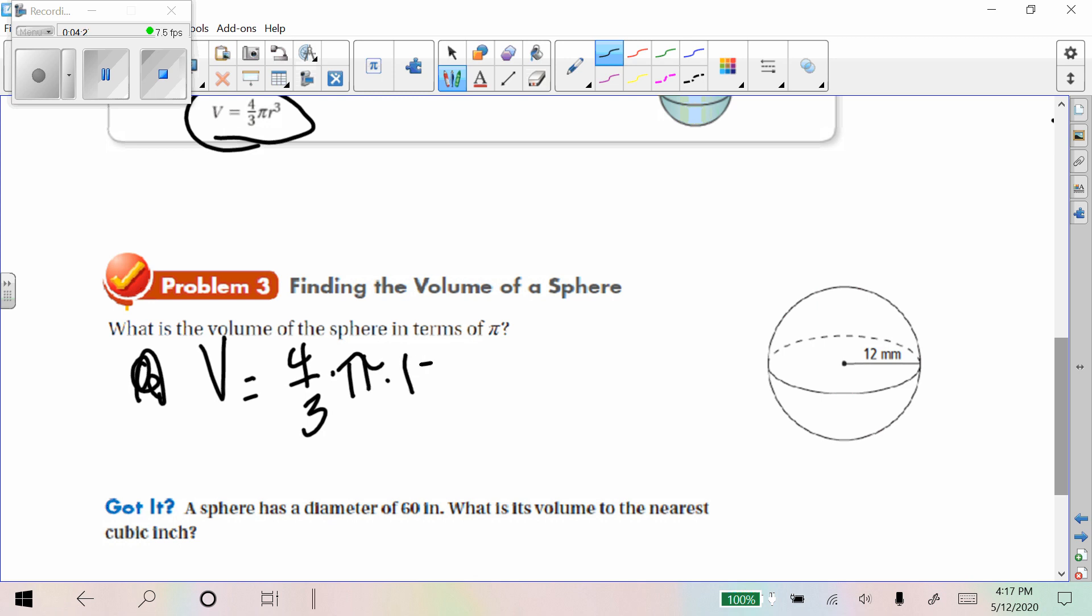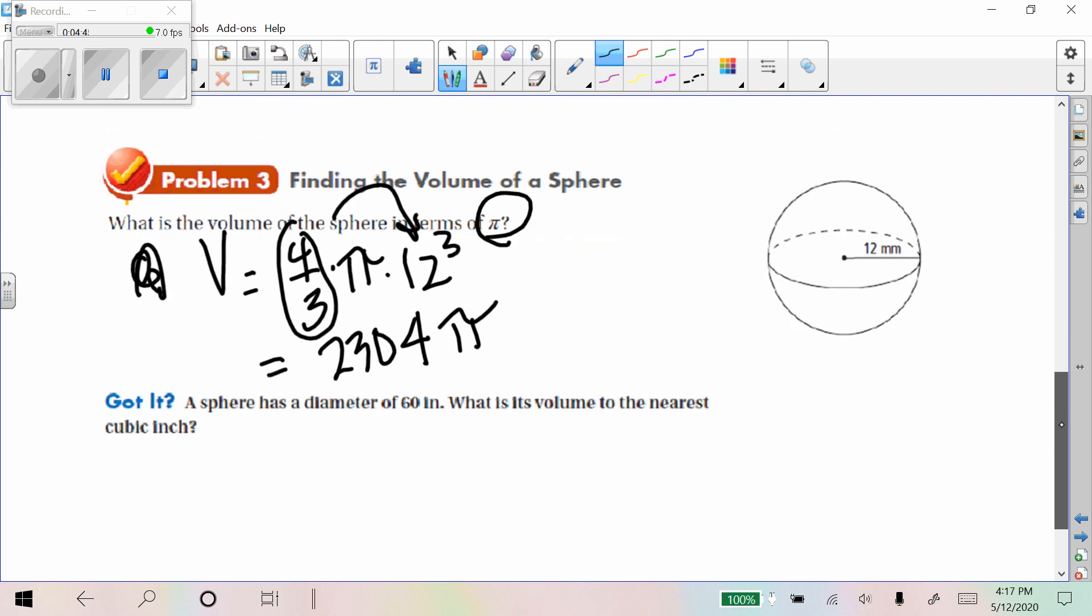volume equals 4 thirds times pi r cubed. And r we're going to use 12 cubed. And we want it in terms of pi, so I'm just going to take this 4 thirds times 12 cubed and get that. And that gives me 2,304 pi. So you try one. All right, that's what I got for that one.